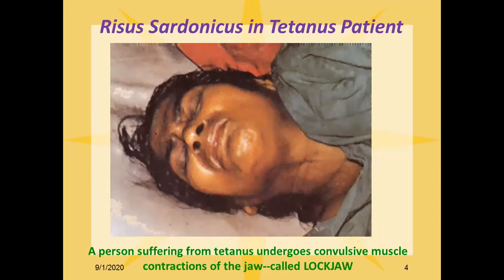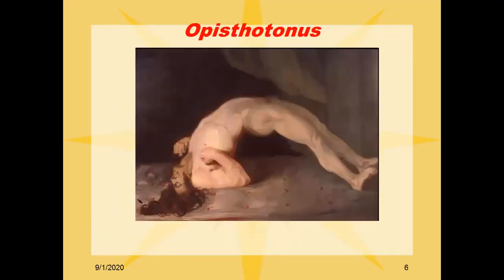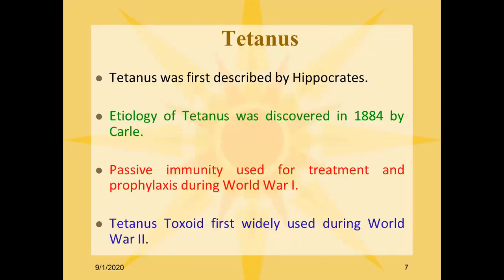A person with tetanus undergoes convulsive muscle contractions of the jaw, known as lockjaw. Contractions of the muscles of the back and extremities lead to opisthotonus. Tetanus was first described by Hippocrates in the Greek era. The pathology of tetanus was discovered in 1884 by Paul, and passive immunity was used for treatment and prophylaxis during World War I.